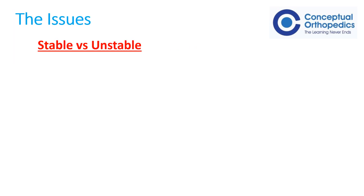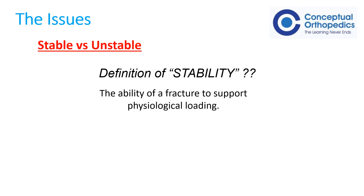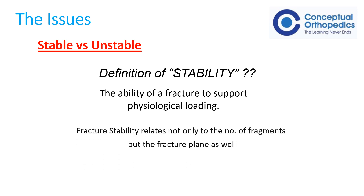What is stable and what is an unstable fracture? Stability can be defined as the ability of a fracture to support physiological loading. Fracture stability relates not only to the number of fragments but also to the fracture plane. For example, a simple transverse reverse oblique fracture is considered unstable — although there is no comminution — by virtue of the fact that the plane of the fracture is in a different orientation. It is still an unstable fracture.